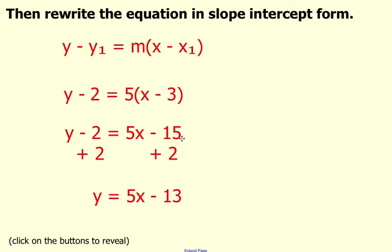In order to isolate the variable Y, we must do the inverse of subtract 2, which is add 2. So make sure to add 2 to both sides of your equation.